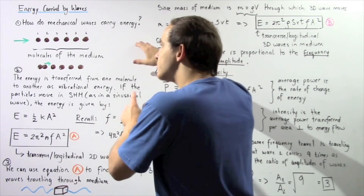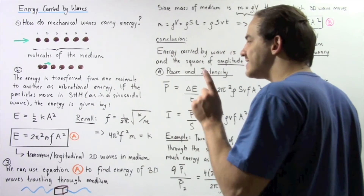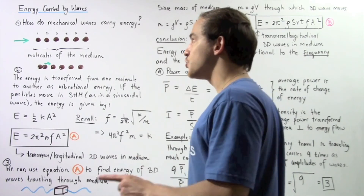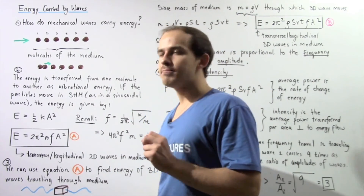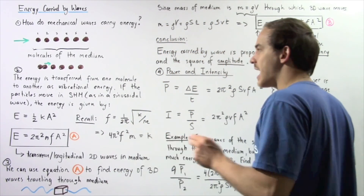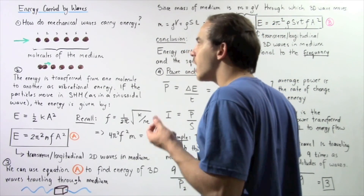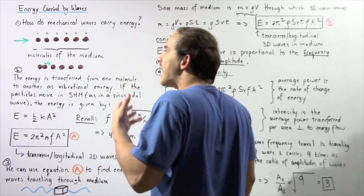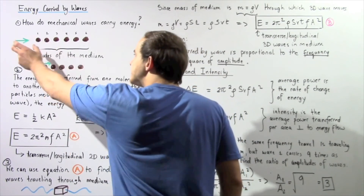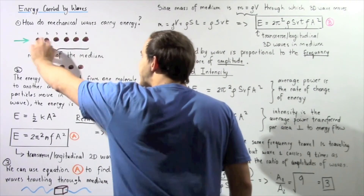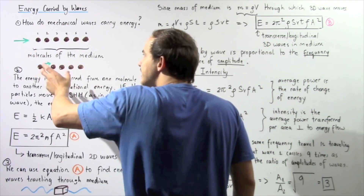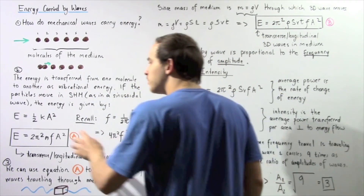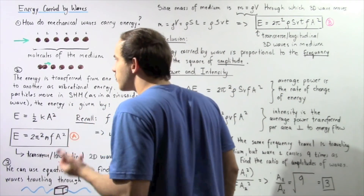If the particles vibrate in simple harmonic motion, as for example in a sinusoidal wave, then the energy is given by the formula: energy equals one half multiplied by the spring stiffness constant multiplied by the square of the amplitude, the square of the maximum displacement. Notice there is no spring stiffness constant here because these are vibrating molecules, not springs. So we want to replace k with some other value.